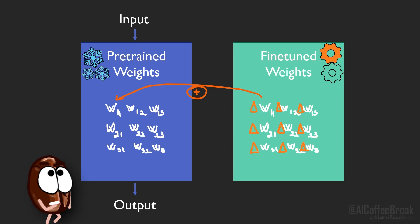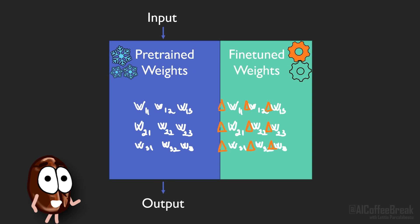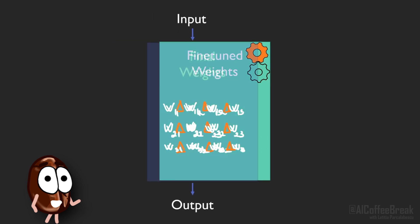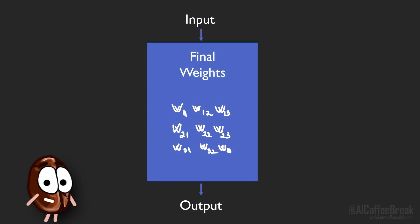But come on, what did we do? We now have doubled the number of parameters on our hard drive. Yes, but it is double the amount on our hard drive and not on our GPU, because on our GPU, when we load the fine-tuned model for inference, we add the fine-tuned weights to the pre-trained weights, so we still have one set of weights for inference in our video memory, not two.